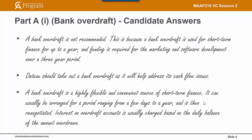This is another example of an answer: 'A bank overdraft is a highly flexible and convenient source of short-term finance. It can usually be arranged for a period ranging from a few days to a year and is then renegotiated. Interest on overdraft accounts is usually charged based on the daily balance of the amount overdrawn.' This is effectively explaining what a bank overdraft is — it's not providing any advice as to whether or not it should be taken out, and there's no linkage to the specific circumstances in the scenario. This answer is actually taken directly out of the CSG, which highlights the importance of not doing that and of tailoring your answers to meet the specific requirements in the question.